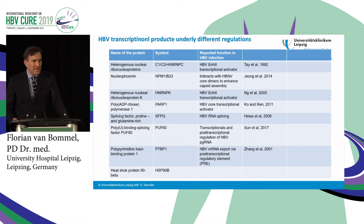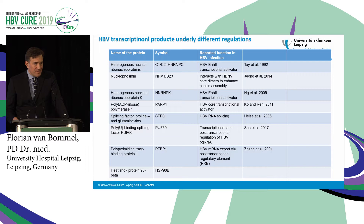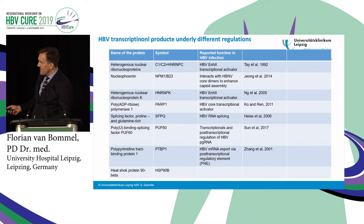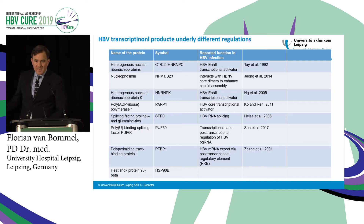The HBV transcriptional product underlies different regulations — a very important point. These different biomarkers all come from CCC DNA, but they underlie different regulations. This means they can appear in the serum in different scenarios at different levels, and different approaches to treat patients or change the viral environment can lower one biomarker without lowering all of them. There are different regulatory steps, including splicing proteins that modify splicing — turning it on or off — and this is how those biomarkers are being regulated.